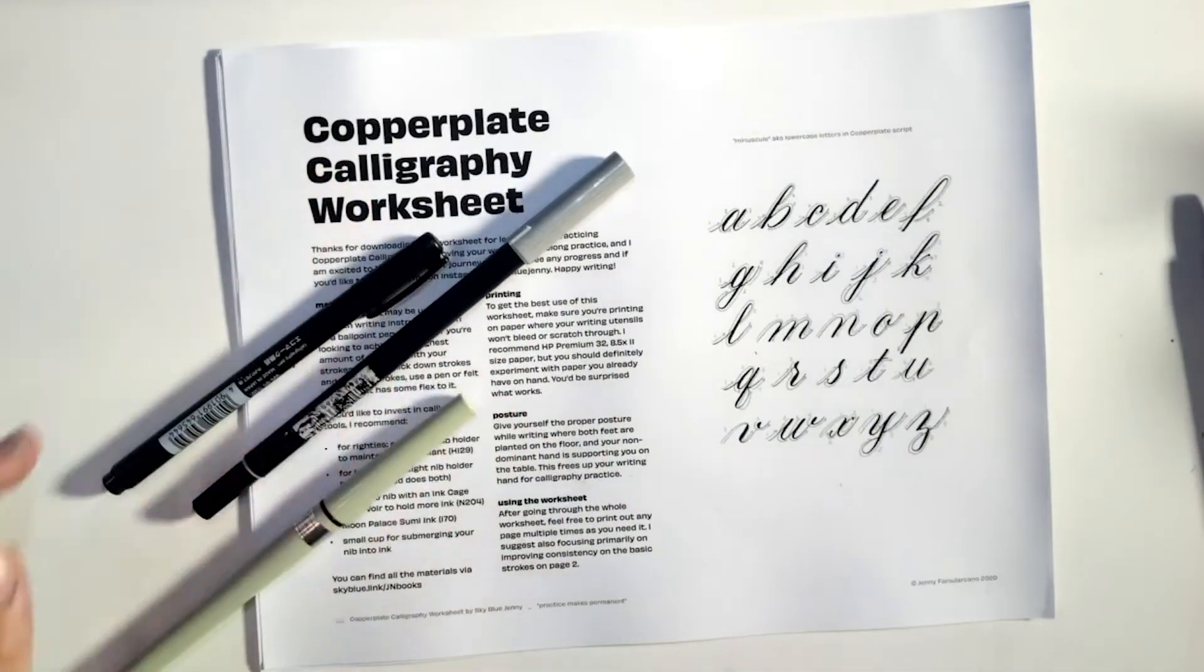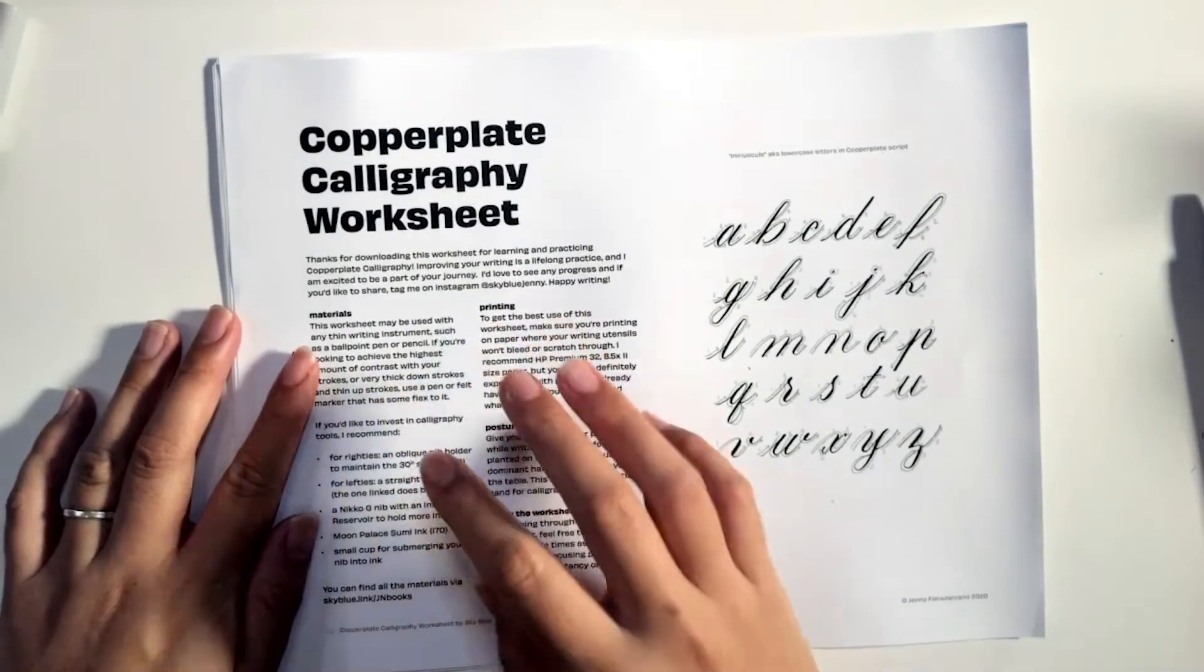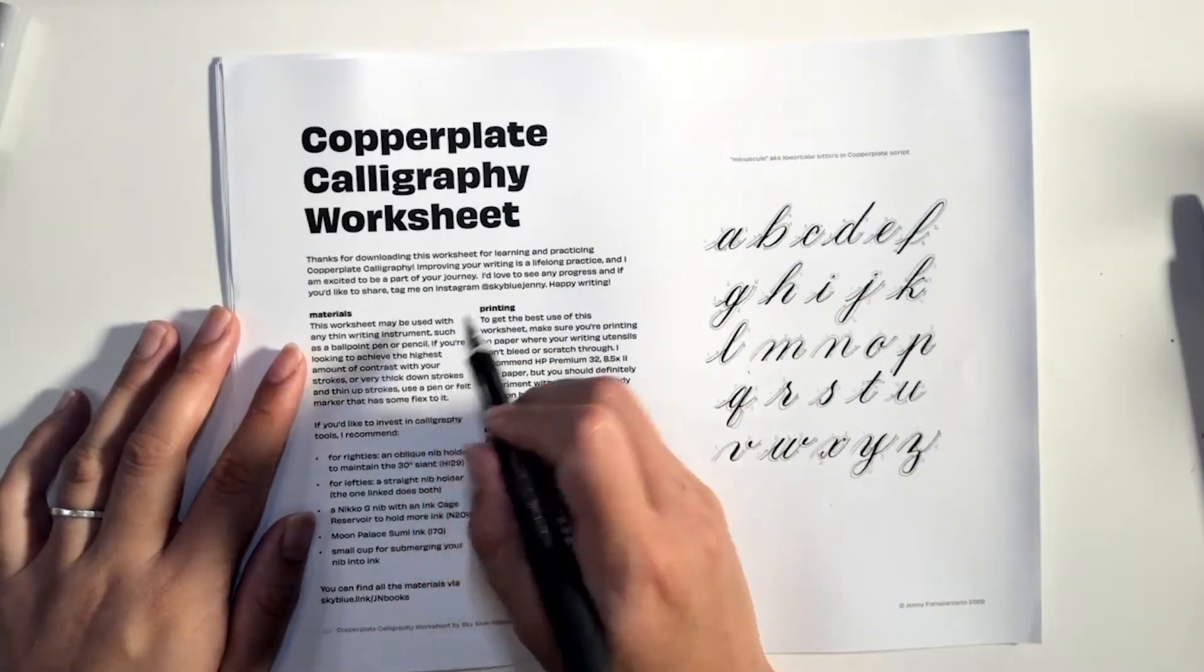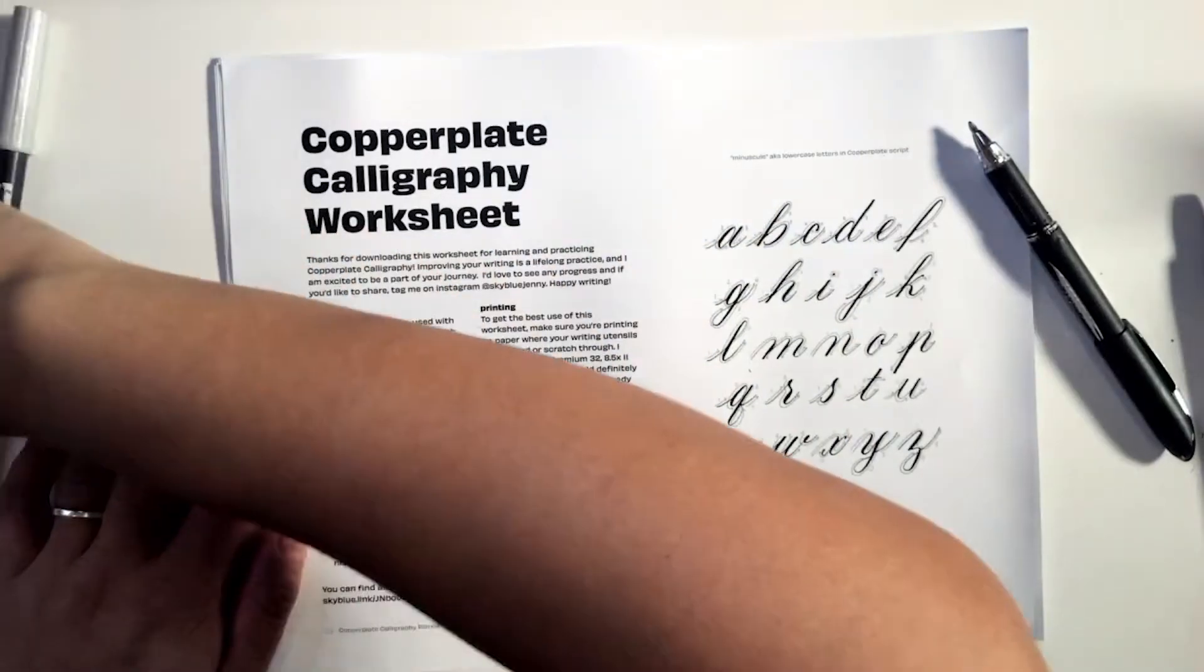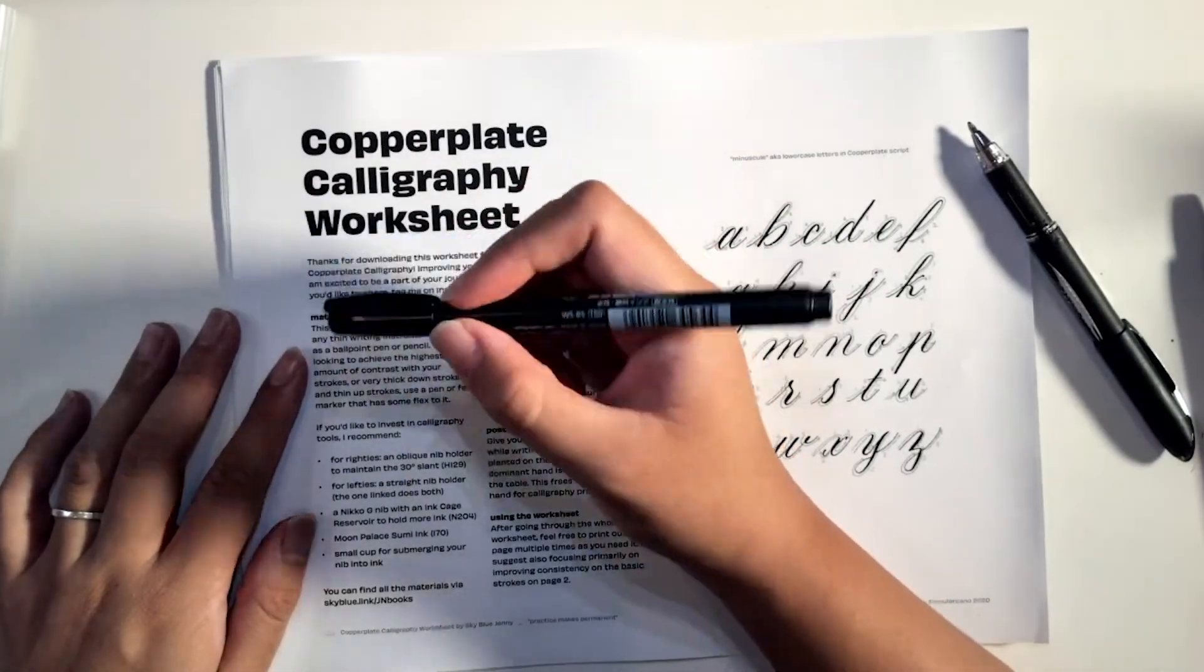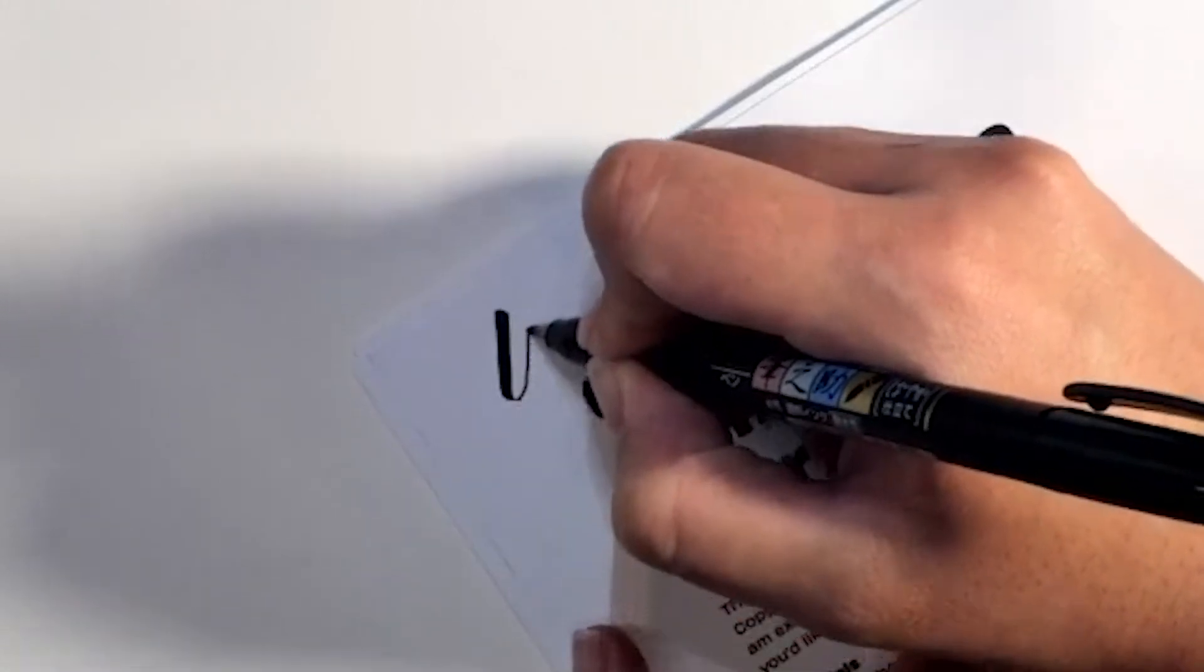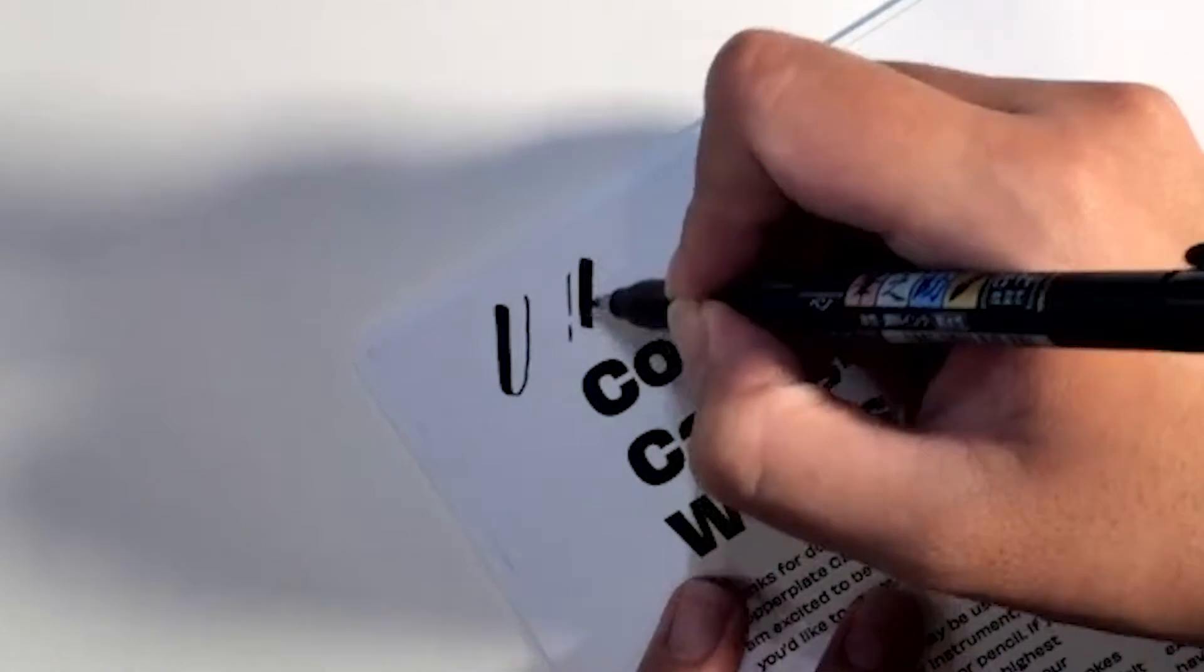Alright, so you can use any sort of writing instrument with this. You can use a ballpoint pen, you can use a pencil. If you're looking to achieve a high amount of contrast with your stroke, so something that makes it thick versus thin, I would use a pen or felt marker that has some flex to it. And the way that you can test it out is by adding a lot of pressure and then you'll see the thick and then it goes thin. So there should be very good variation between adding pressure and no pressure.